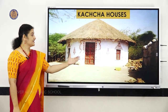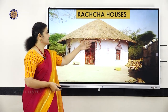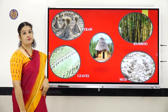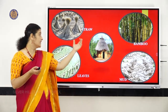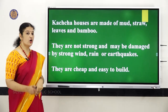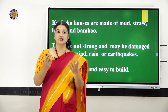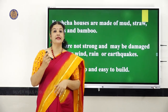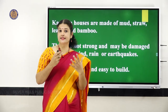Kaccha houses are usually found in villages. They are made of mud, straw, leaves, and bamboo. The roof of kaccha houses is made of thatched or palm leaves. They are not strong and can be damaged easily — strong wind, flood, earthquake, or rain is enough to destroy a kaccha house. They have to be rebuilt and repaired every year, just before the rainy season. However, they are cheap and easy to build because mud and straw are available everywhere.